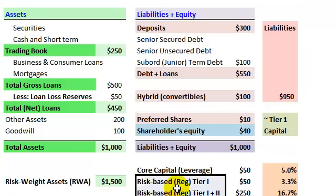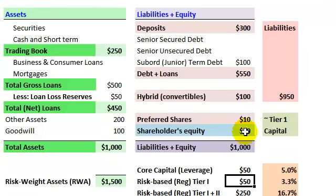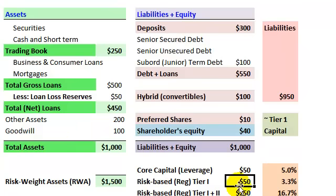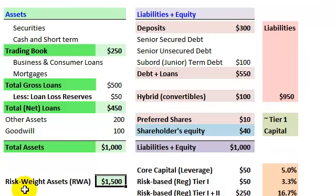Now, how about the two ratios that come from Basel regulations — the risk-based Tier 1 capital ratio? For Tier 1, the capital is the same: core capital including shareholders' equity and preferred shares, which we call Tier 1 — the buffer of the highest quality, ready and available to absorb losses. So $50 is the same numerator, but the difference is that instead of dividing by the book value of assets carried on the balance sheet, the assets are risk-weighted.